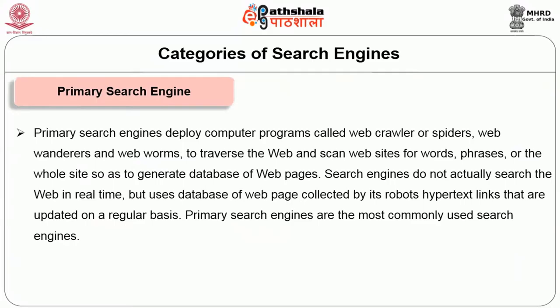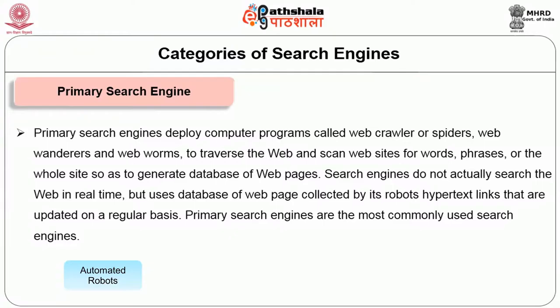Primary search engines deploy computer programs called web crawlers, spiders, web wanderers, and web worms to traverse the web and scan websites for words, pages, or whole websites to generate a database of web pages. They do not search the web in real time but use a database collected by their robots, updated on a regular basis via hypertext links. Primary search engines can be divided into four sub-categories: automated-robot-based, designated robots, breadth-oriented, and depth-oriented search engines.